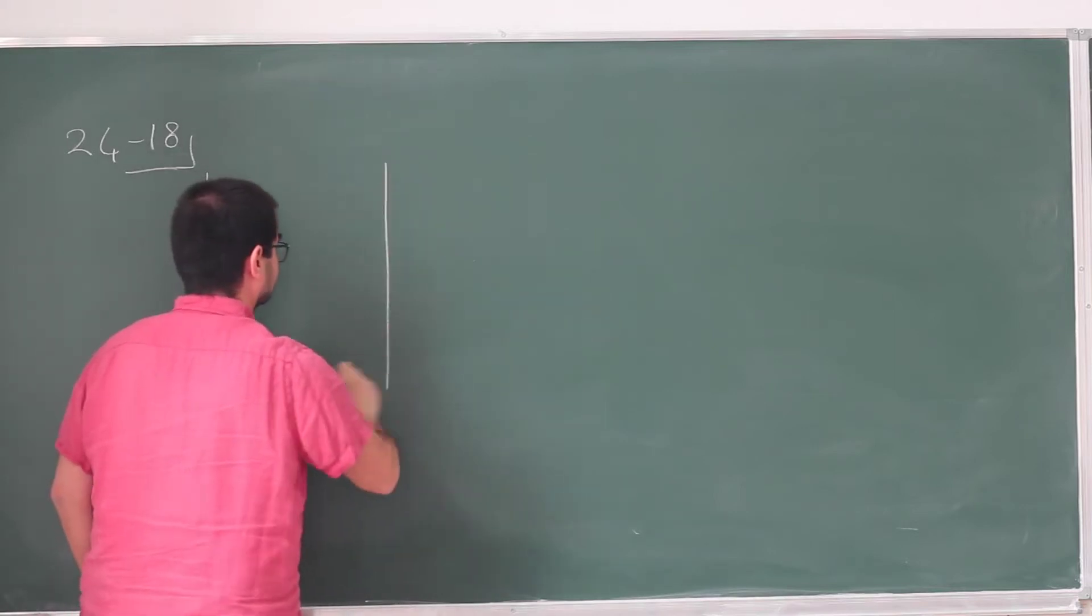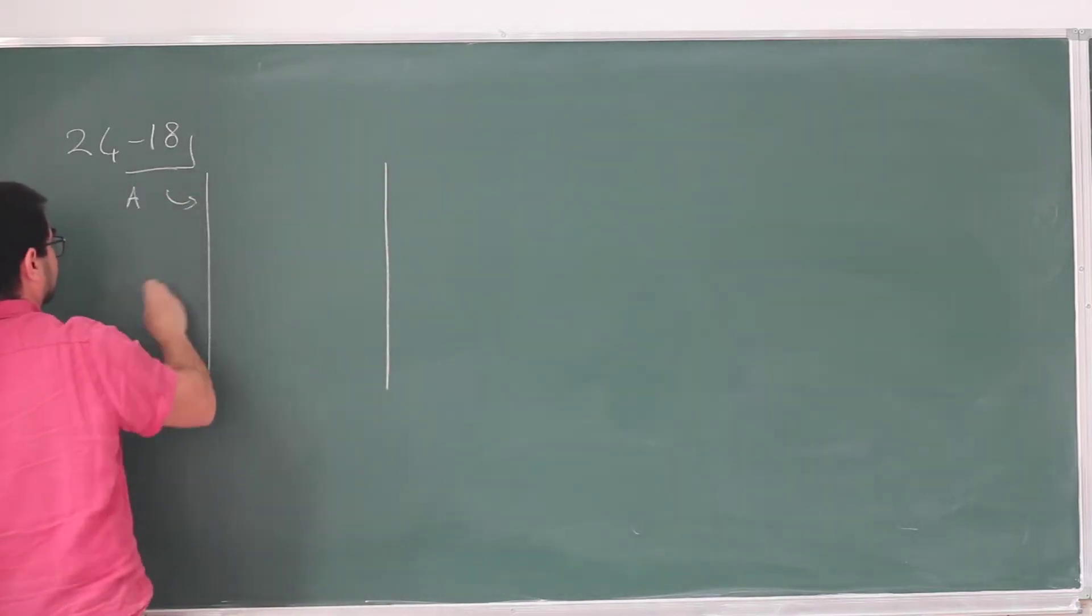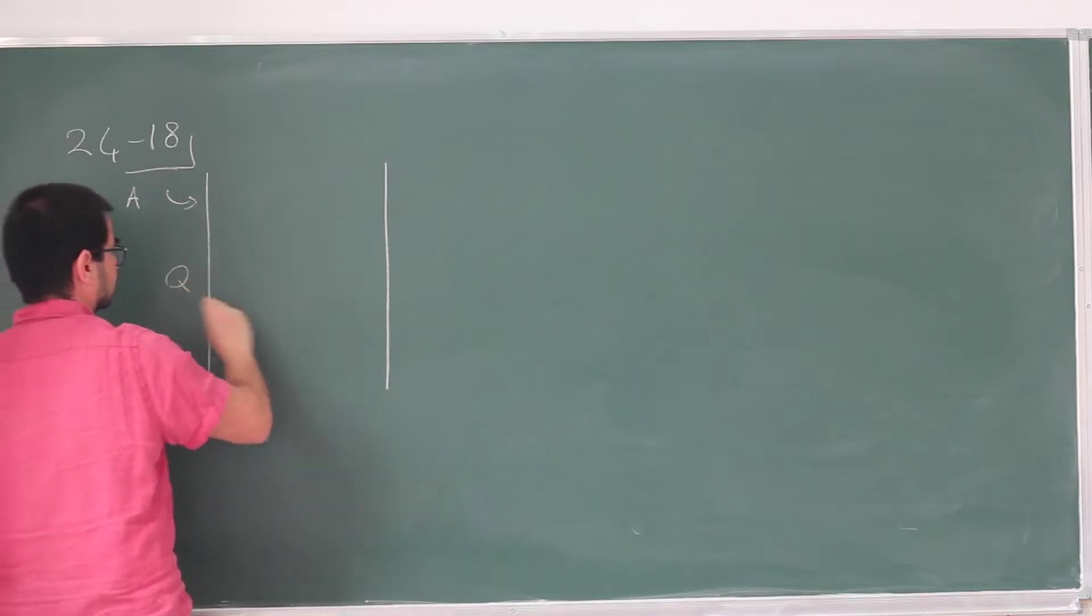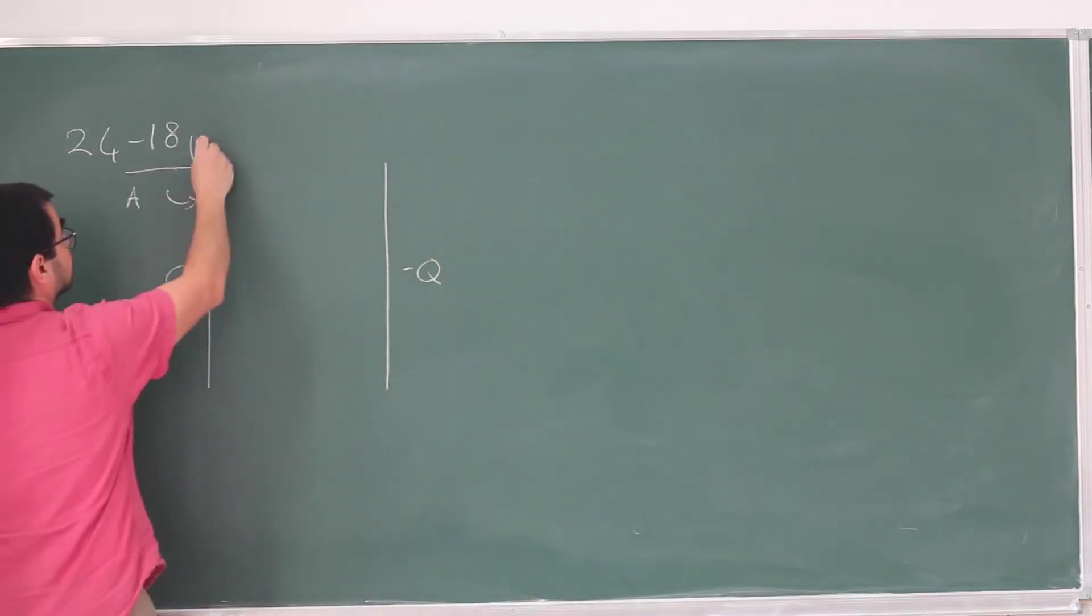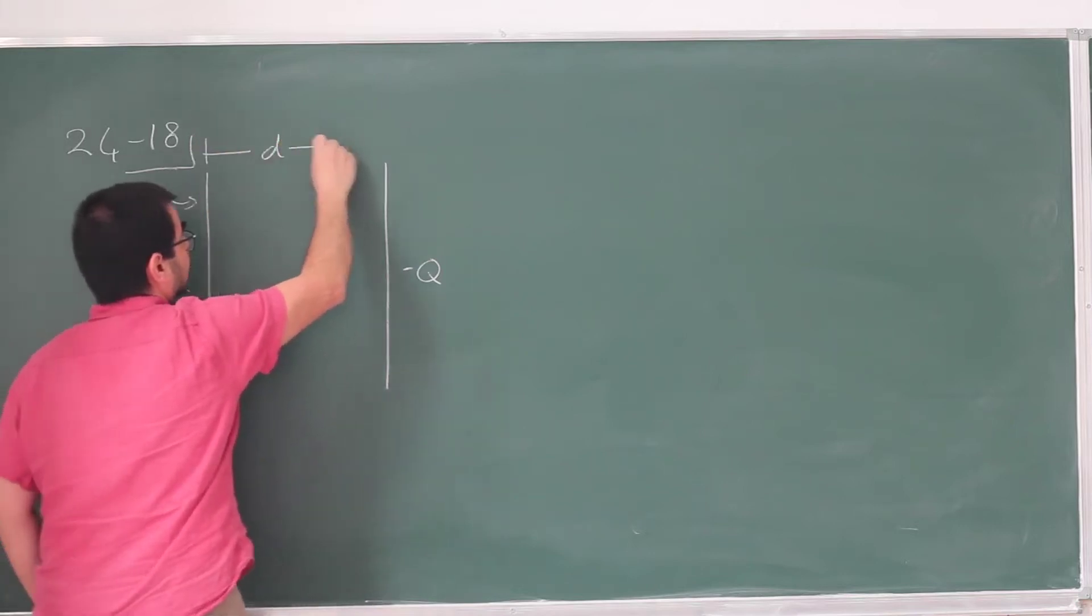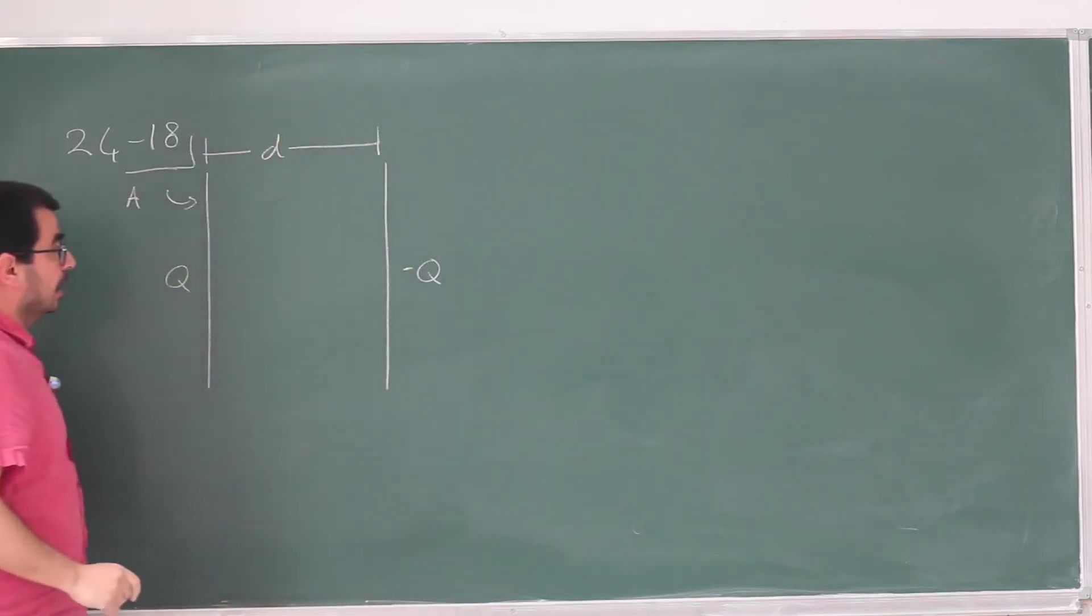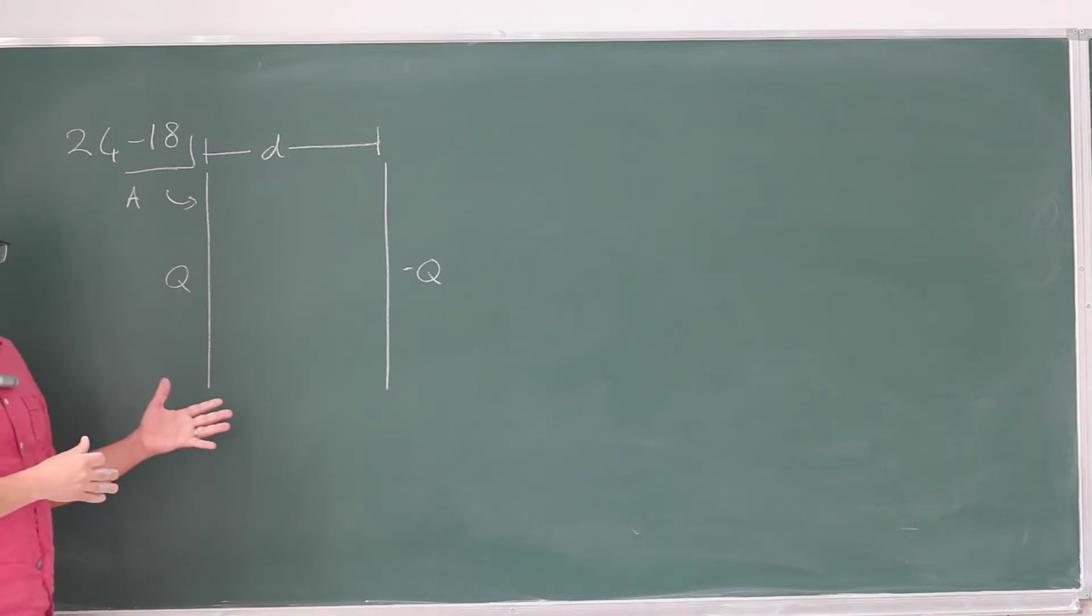So we have two parallel plates. They have surface area A, and let's say that one is positively, one is negatively charged. They have some separation of D, and we actually calculated the capacitance for this configuration, for this geometry.